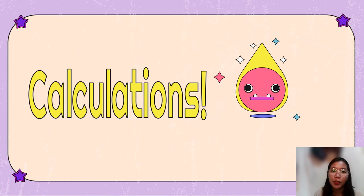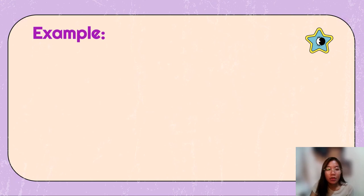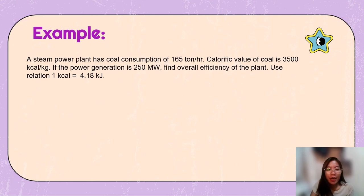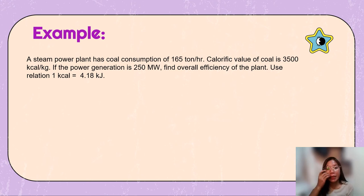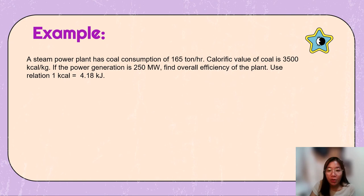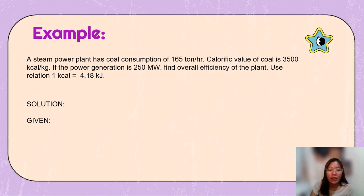Now we have the calculations. A steam power plant has a coal consumption of 165 tons per hour. The calorific value of coal is 3,500 kcal per kilogram. If the power generation is 250 megawatts, find the overall efficiency of the plant. Use the relation: 1 kcal equals 4.18 kJ.